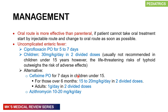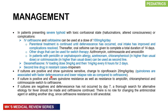Alternatives include cefixime orally for 7 days. For children over 6 months, give 15–20 mg/kg/day in two divided doses; for adults, 1 gram per day in two divided doses. Azithromycin can be given at 10–20 mg/kg/day. In patients with severe typhoid fever — confusional state, hallucinations, altered level of consciousness — give a third-generation cephalosporin: intravenous ceftriaxone or cefotaxime at 100 mg/kg/day. Parenteral treatment should be continued until the fever resolves, then switch to oral antibiotics. Do not forget to give dexamethasone — IV loading dose of 3 mg/kg, then 1 mg/kg every 6 hours for 2 days.